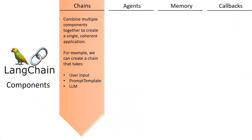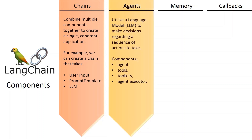Now let's look at agents. The primary function of agents is to utilize a language model to make decisions regarding a sequence of actions to take. In the context of chains, this sequence of actions is hard-coded. However, in the case of agents, a language model serves as a reasoning engine to determine which actions to take, and in which order.